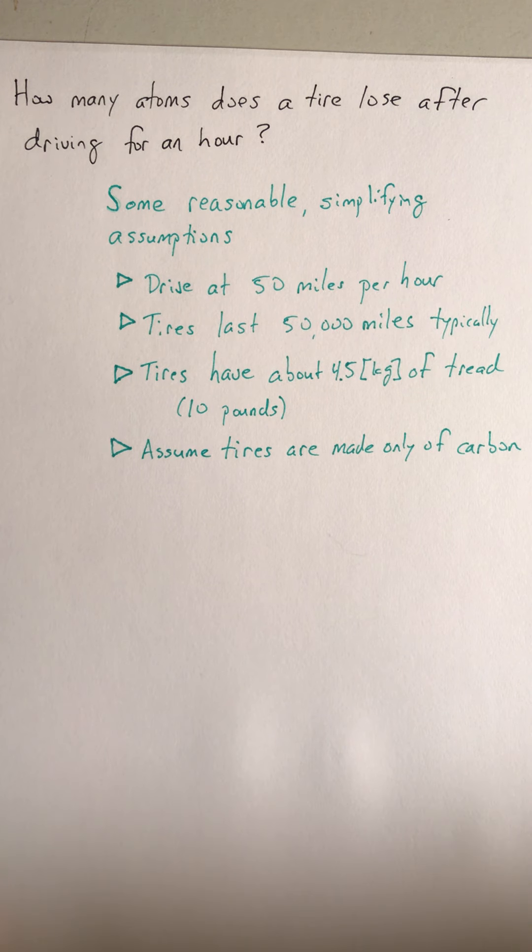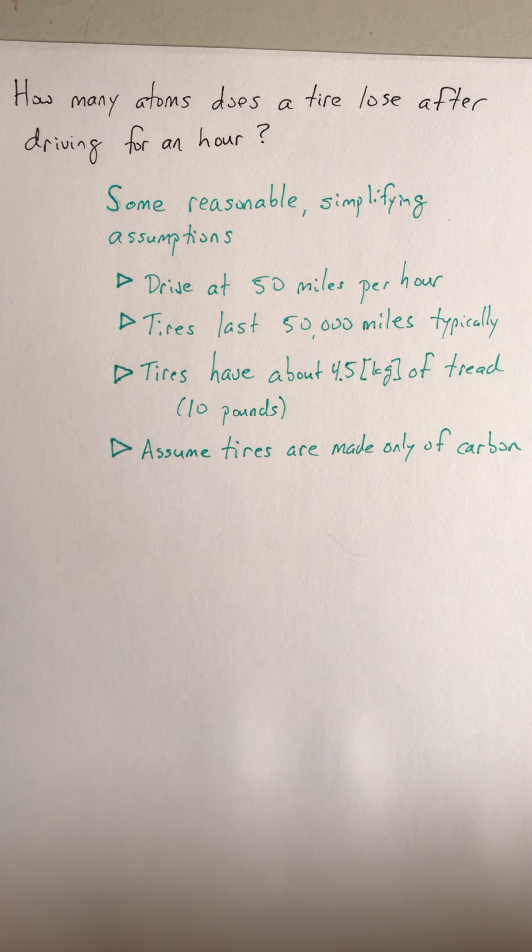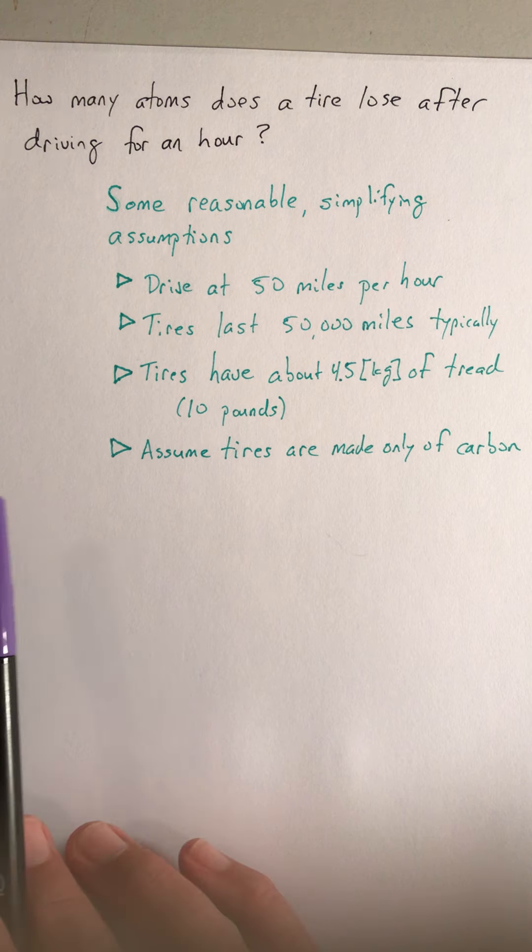This particular Fermi problem is: how many atoms are going to come off of your tire if you drive for an hour? This makes the point that these are estimates—I'm never going to count how many atoms come off, and you're not either, but just an order of magnitude estimate of what a reasonable answer is.